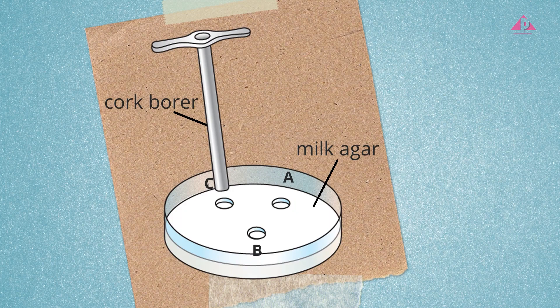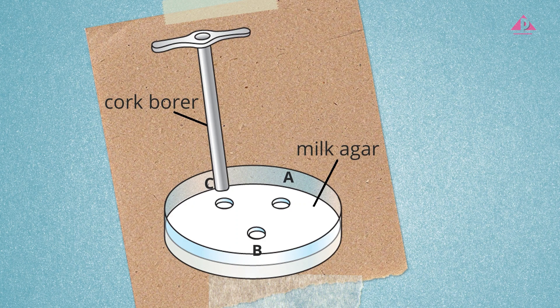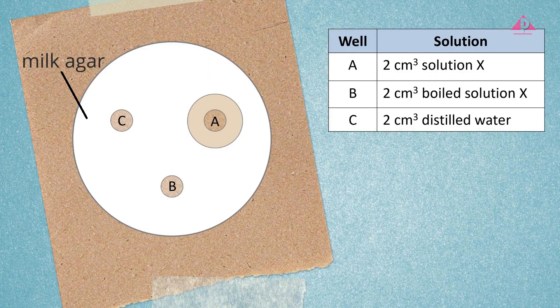We've had a brief revision on control experiments. Let's analyze another noteworthy example. This setup is used to investigate the action of Solution X on milk protein. The milk agar plate contains milk proteins and is white in colour. If the milk proteins are broken down, a clear zone will form. Three wells were made on the milk agar plate and labelled A to C. Different substances were added to the wells. After 30 minutes, a clear zone appeared only around well A.